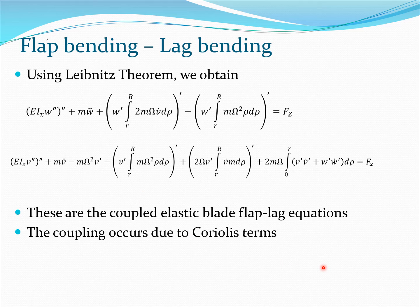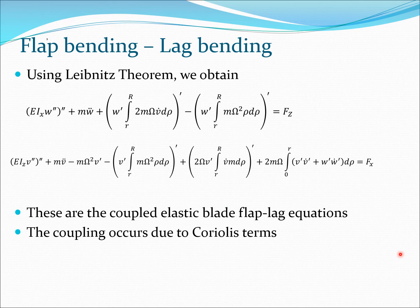Looking carefully at these equations, we clearly see that these are coupled elastic blade flap-lag equations. The equations are coupled because in the w-equation (flap equation) you have the presence of the v-dot term, and in the v-equation (lag equation) you have the presence of the w-dot terms — that essentially couples these equations. These couplings are due to Coriolis terms and you cannot just remove them, so you have to manage these equations with the couplings included and perform non-linear solutions.